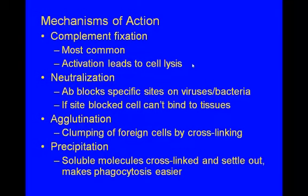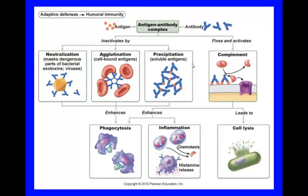For mechanisms of action, you have complement fixation — by far the most common — where an antibody marks a cell and a complement protein pokes a hole in it causing cell lysis. Neutralization is where antibodies block specific sites on viruses and bacteria so the cell can't bind to tissues. Agglutination is clumping of foreign cells by cross-linking. Precipitation is where soluble molecules get cross-linked and settle out, making it easier for phagocytosis. The diagram shows all these mechanisms: neutralization blocks the binding site, agglutination and precipitation make phagocytosis easier, and complement pokes a hole so everything leaks out.